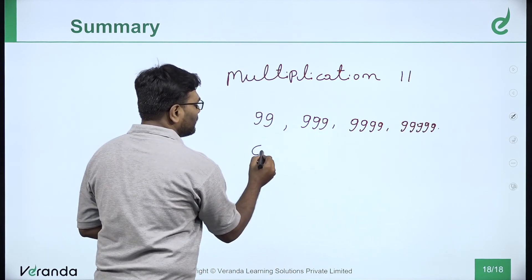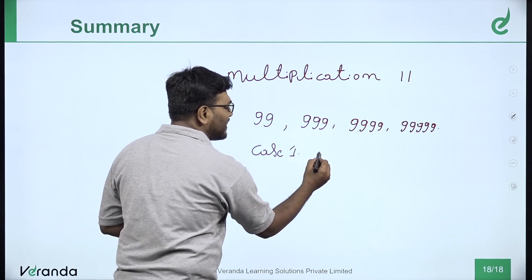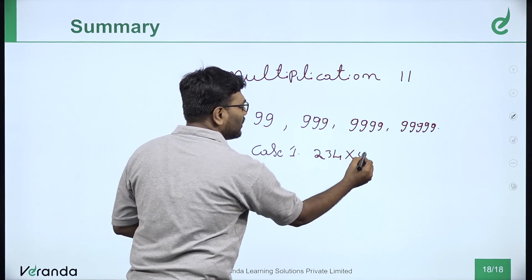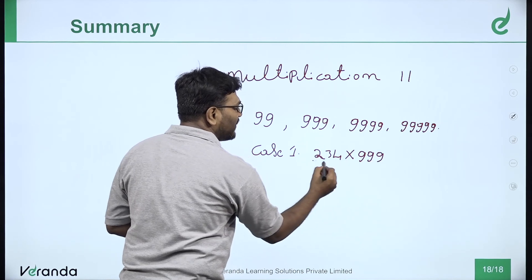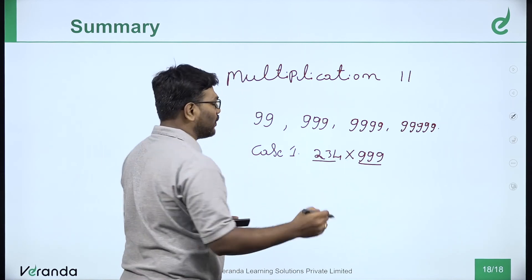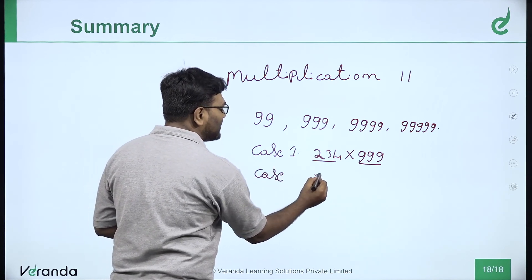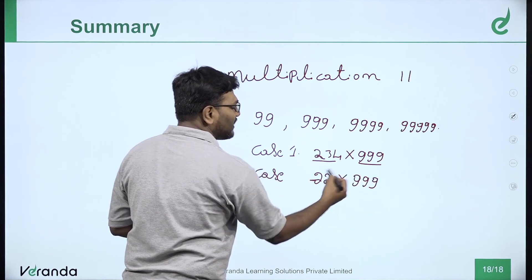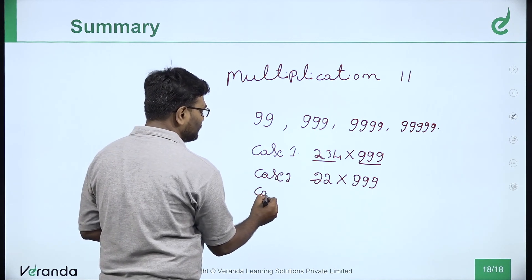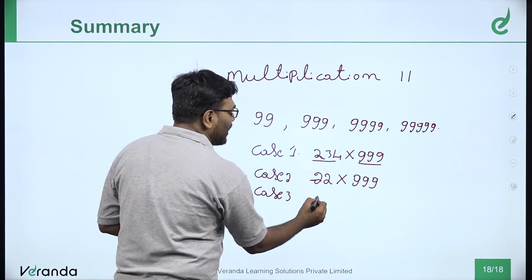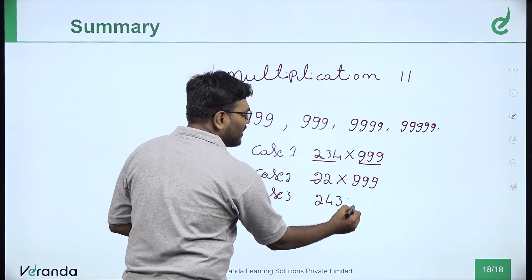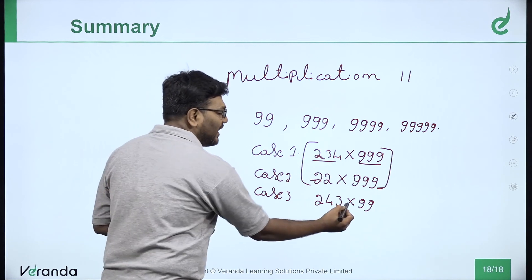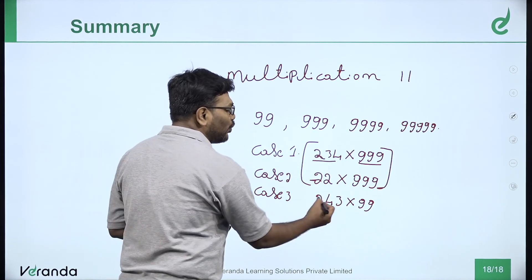The 3 cases are: Case 1 — number of digits equals number of 9s; Case 2 — number of 9s is greater than number of digits (add leading zeros); Case 3 — number of digits is greater than number of 9s (use the subtraction method: express 9s as power of 10 minus 1). For example, 243 into 99.